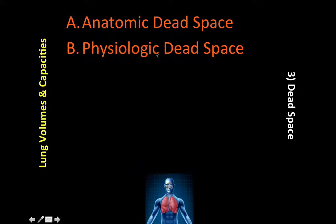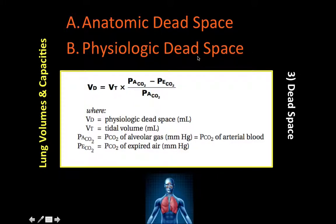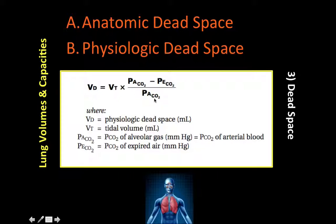Physiologic dead space can be greater than anatomic dead space in lung diseases — specifically when there is a ventilation-perfusion mismatch, or VQ mismatch, which will be covered in a later video. The physiologic dead space (VD) is calculated as: VD = tidal volume × (pCO2 of alveolar gas − pCO2 of expired air) / pCO2 of alveolar gas, where alveolar pCO2 equals arterial pCO2.